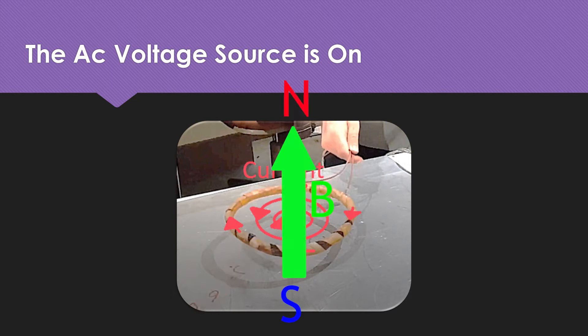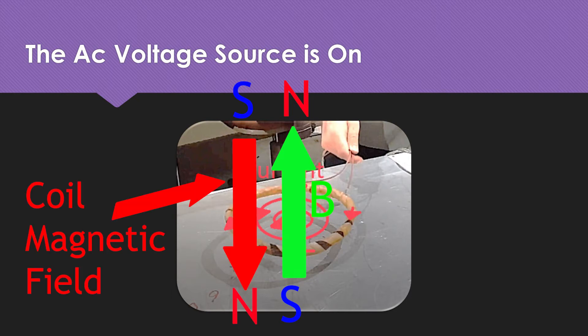This current wants to oppose the magnetic field generated by the coil. So its magnetic field is in the opposite direction of the coil magnetic field. And that's why the coil hovers.